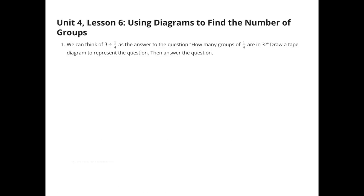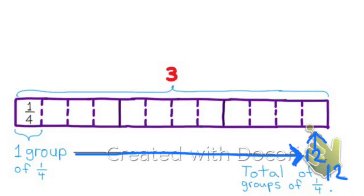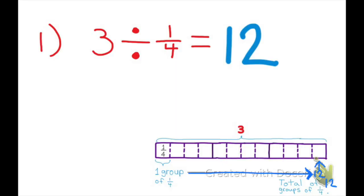Number 1. We can think of 3 divided by 1/4 as the answer to the question: How many groups of 1/4 are in 3? Draw a tape diagram to represent the question, then answer the question. This entire tape diagram represents 3 whole units, and it's been divided up into 12 groups of 1/4. 3 divided by 1/4 equals 12.